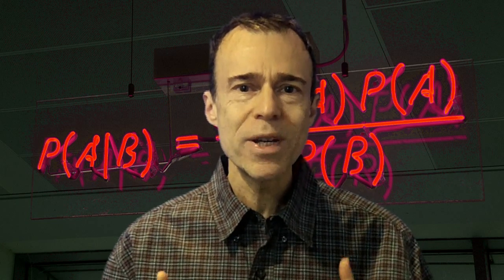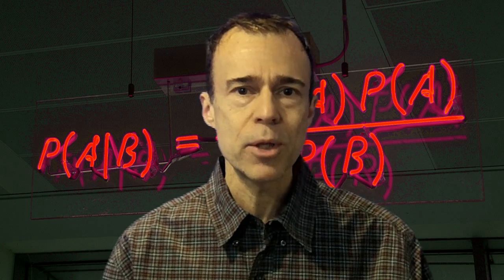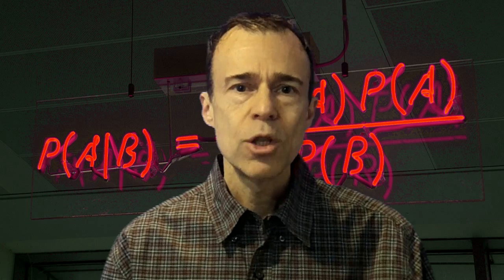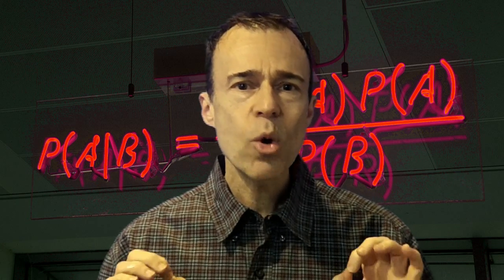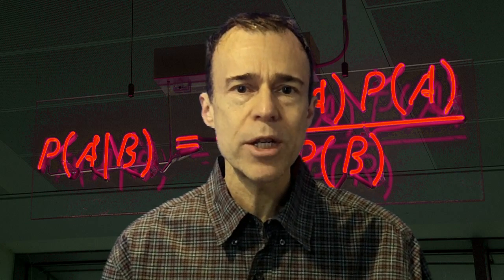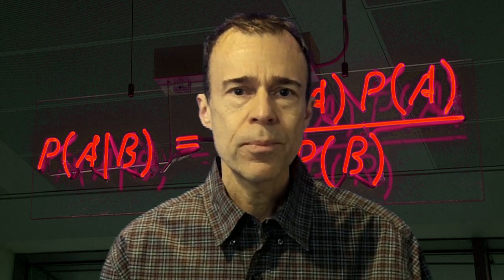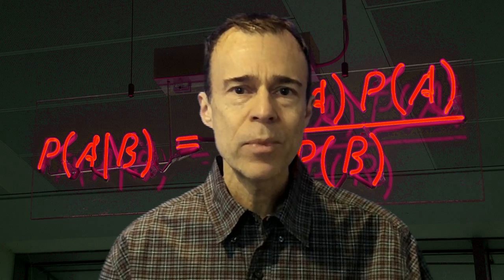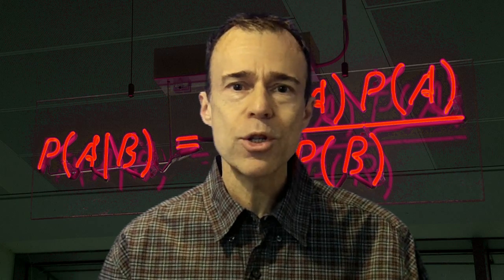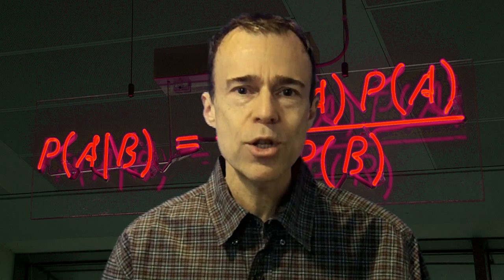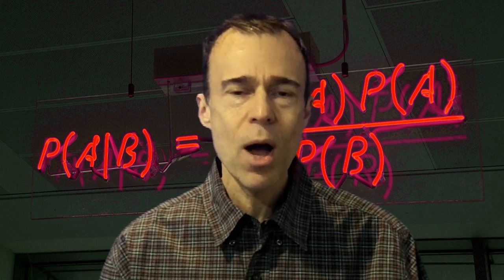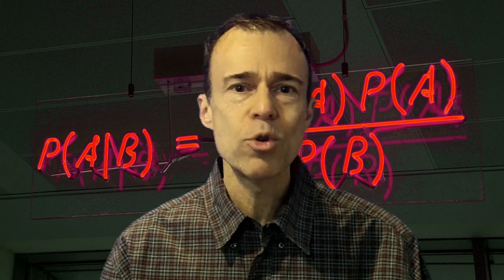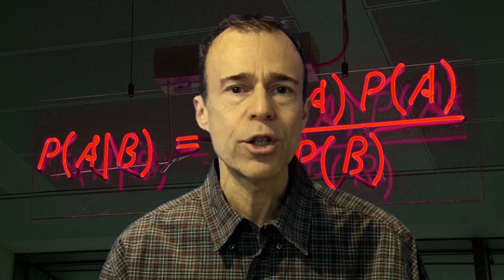Bayes Theorem has three of these terms, and if you're disagreeing with someone, usually you're only disagreeing about one of the three terms. So if you both understand Bayes Theorem, it can focus you on where the disagreement is and resolve the problem a lot quicker. It can even expose someone who's being irrational.